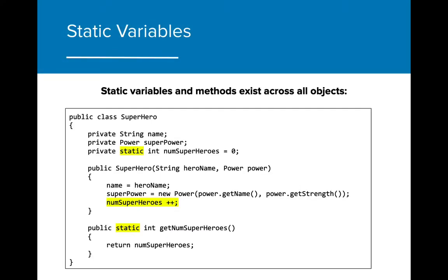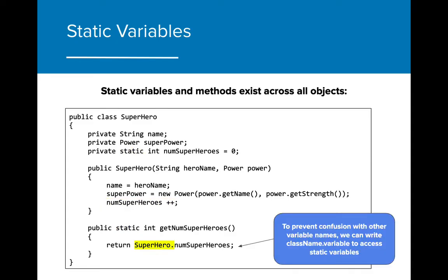Static variables, however, exist across all of the objects of a class. If we were to add the keyword static to the getter method and numSuperheroes, we will get the result that we intended. When creating static variables, it's good practice to use the className.variableName notation. If for some reason we had created another numSuperheroes variable, this notation helps indicate that the variable that is being called is the SuperHero static variable numSuperheroes, and not any other similarly named variable.